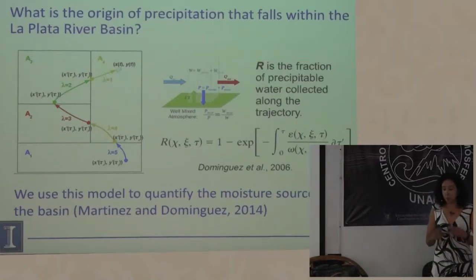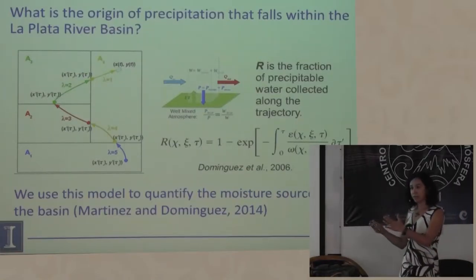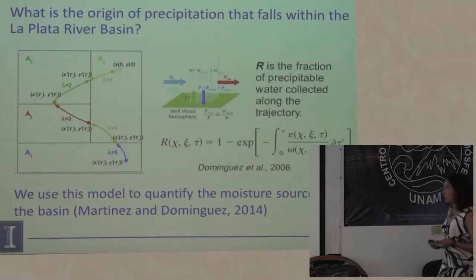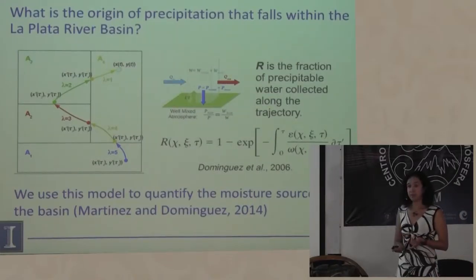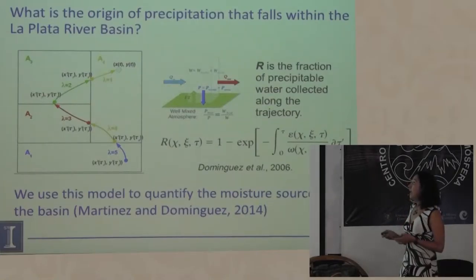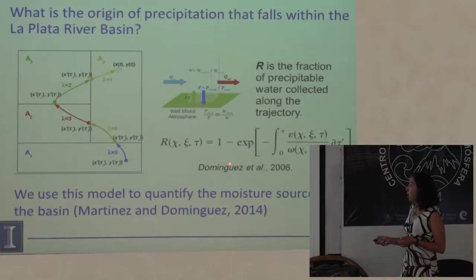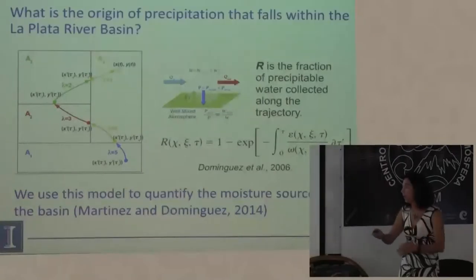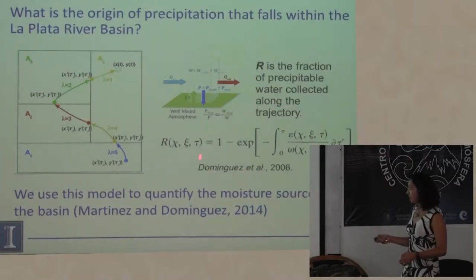La primera pregunta que atacamos —esta es una serie de tres partes, el primer artículo de la tesis de doctorado de Alejandro— es: ¿cuál es el origen de la precipitación que cae dentro de la cuenca de La Plata? ¿De dónde viene la humedad? Empezamos con un modelo analítico desarrollado en mi doctorado, donde básicamente tienes una columna de la atmósfera y la sigues en el tiempo sobre la cuenca, y puedes calcular la fracción de agua precipitable recolectada a lo largo de la trayectoria.